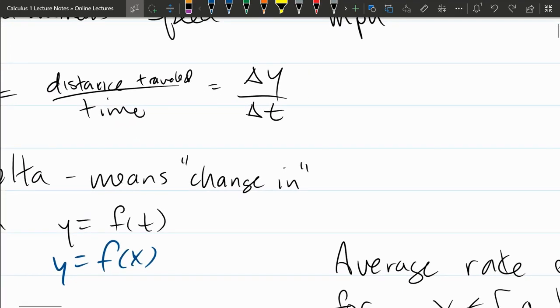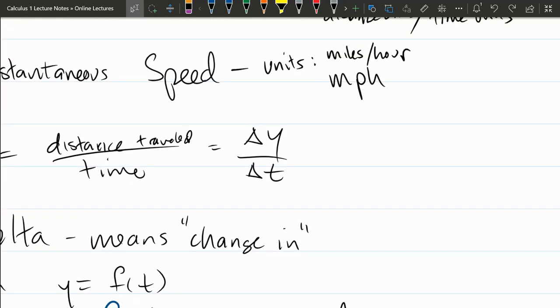We're going to look a little bit more closely at this average speed here. Just like y equals f of t, we want to look at two, the change in y is two different y values.